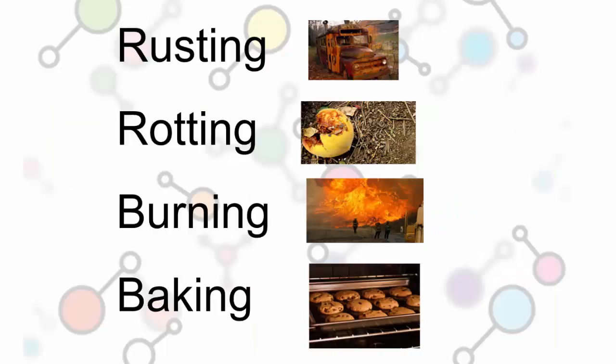Look at a few examples of some chemical reactions. We like to say these are the four most common that you're going to see on the test. Rusting, rotting, burning, baking. Rusting, rotting, burning, baking. We see a bus rusting. We see a piece of fruit rotting. We see a forest fire. And we see cookies baking.